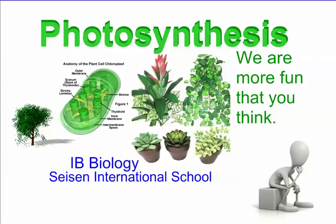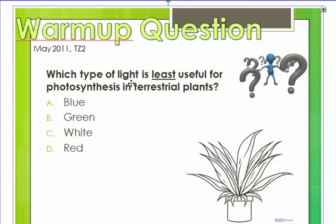Let's start with a simple question: which type of light is least useful for photosynthesis in terrestrial plants? Least useful out of all of these is actually, you guessed it, green. Even though plants look green, that's because they're reflecting all that green light away.